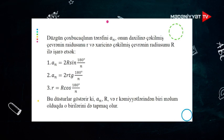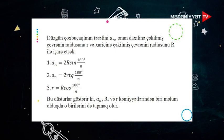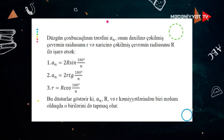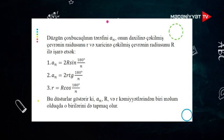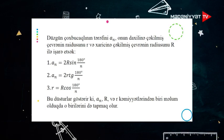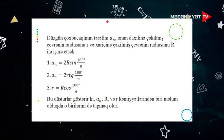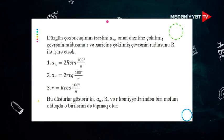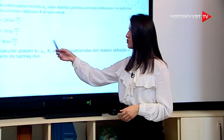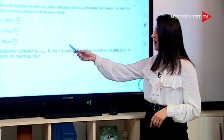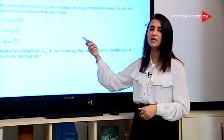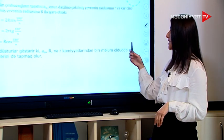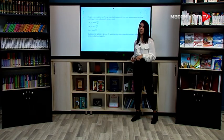Müəyyən düsturlar almış olacaq: a_n = 2R × sin(180°/n); a_n = 2r × tan(180°/n); kiçik r = böyük R × cos(180°/n). Bu düsturlar göstərir ki, a_n yəni tərəf, böyük R yəni xaricə çəkilmiş çevrənin radiusu, yaxud da kiçik r yəni daxilə çəkilmiş çevrənin radiusu — bu kəmiyyətlərdən hər hansısa biri məlum olduqda biz digərlərini tapa bilərik.